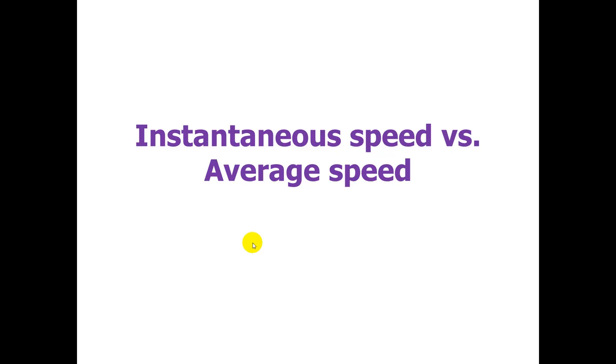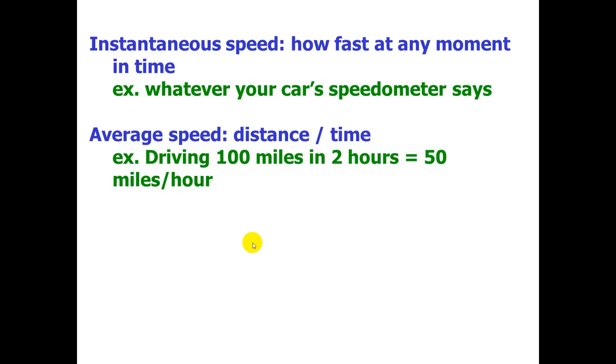Moving on. Instantaneous speed versus average speed. Instantaneous speed is how fast at any moment in time. For example, whatever your car's speedometer says. But, average speed is distance over time. So, for example, if you're driving 100 miles in two hours, that means you have an average speed of 50 miles per hour. Your speed might not be constant the whole time. It may fluctuate all the way from, for example, 40 miles per hour up to 70 miles per hour at some point. It really could be doing anything. But, the distance divided by the time will give you whatever the average of all those speeds are.